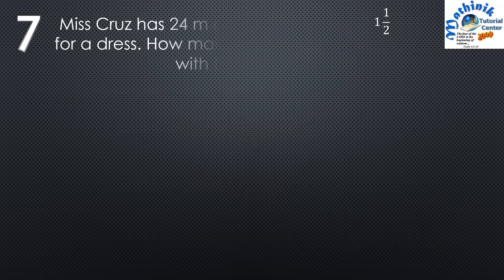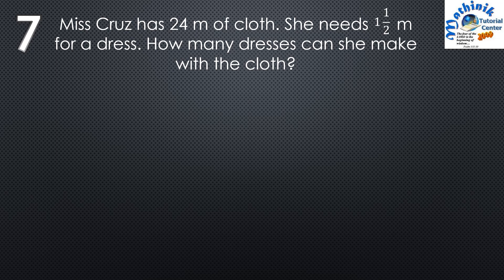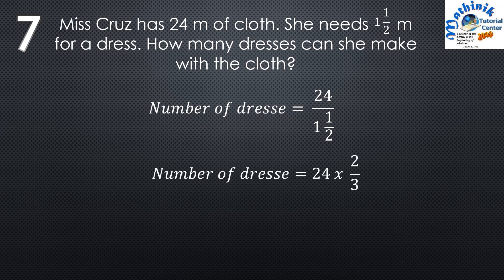Question number 7: Miss Cruz has 24 meters of cloth. She needs one and a half meters for a dress. How many dresses can she make? The number of dresses is obtained by dividing 24 by one and a half, which means 24 times the reciprocal — 2 thirds. 24 times 2 is 48, divided by 3 is 16. Miss Cruz can make 16 dresses.